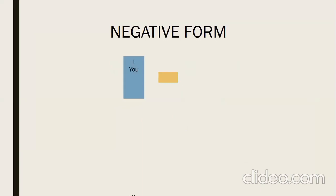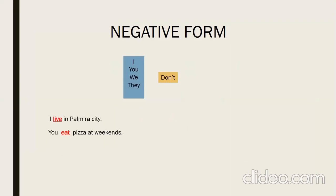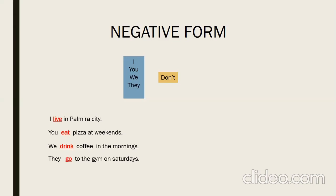The negative form for I, you, we, or they — we use 'don't'. For example, affirmative sentences: I live in Palmira. You eat pizza at the weekend. We drink coffee in the morning. They go to the gym on Saturday.